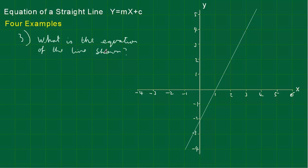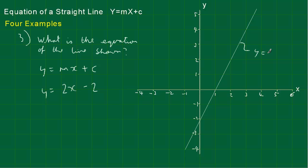What is the equation of the line shown? This is quite an easy one — we just read it off. It's going to be in the form y equals mx plus c. The intercept c we can read straight off: it's at minus 2. The gradient is how far we go up when we go along 1 on x — we go up 2. So the answer is y equals 2x minus 2.